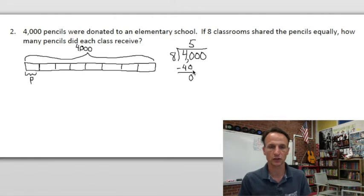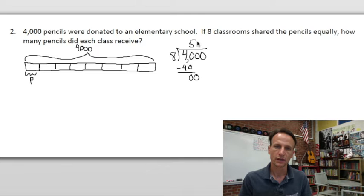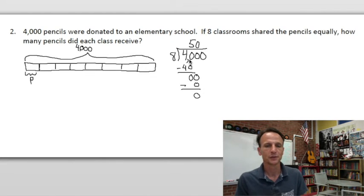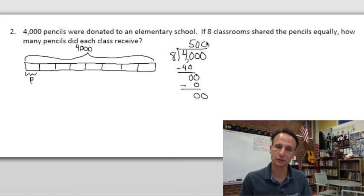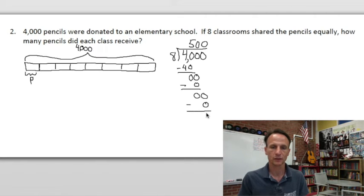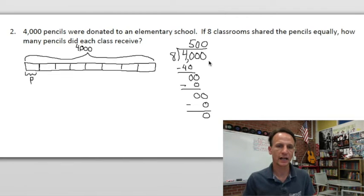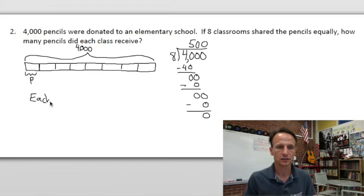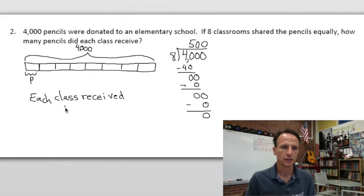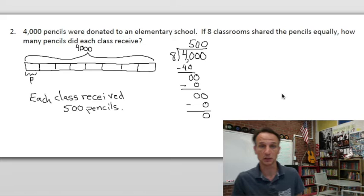Let's treat zeros like any other number. I have zero hundreds, then zero tens to divide — how many eights in zero? Zero, because zero times eight is zero. Subtract and get zero. We have zero ones to divide — again, zero eights in zero. So each class receives 500 pencils. Each class received 500 pencils — which my students go through in an afternoon; I think they eat them.